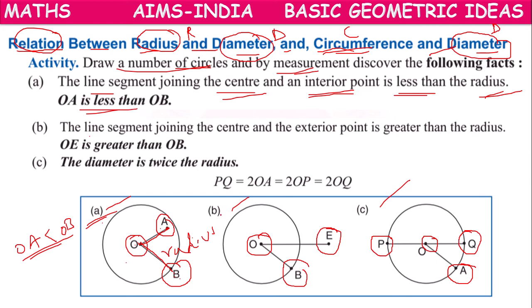In diagram B, the line segment joining the center to an exterior point is greater than the radius. OE is greater than OB, which is the radius. This we have identified from figure B.